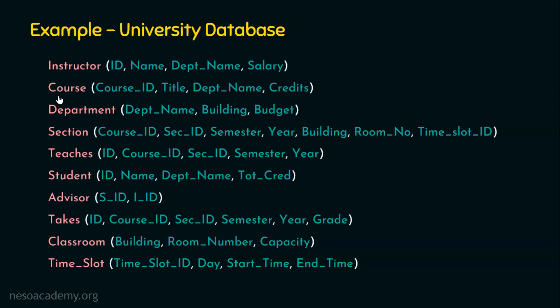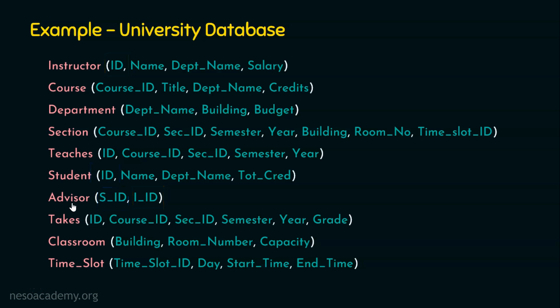Student is going to be related with the course relation through the 'takes' relationship, because a student takes a course. There will also be an advisor relationship that links two tables — the student and the instructor table. So the advisor table will contain an attribute from the student table and an attribute from the instructor table: the id attribute from both the student and the instructor table. Just pause this video for a while and think about the relationships that are established among the relations.